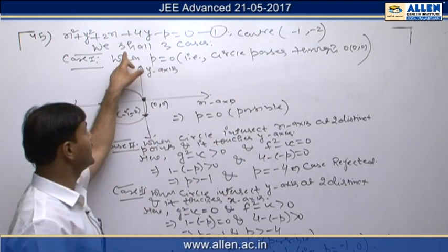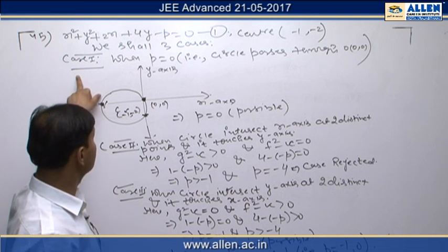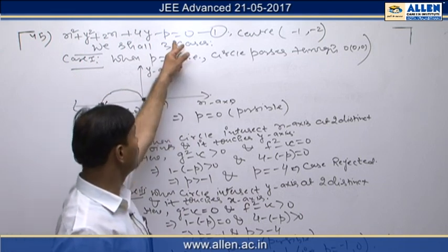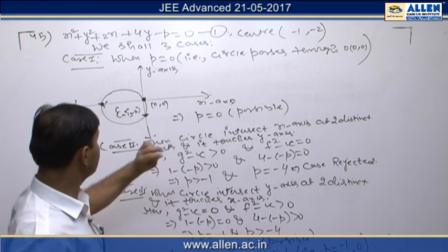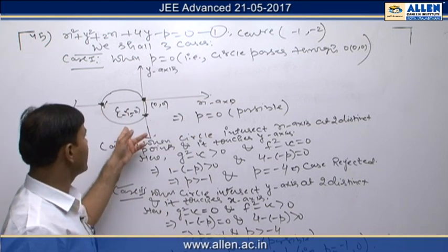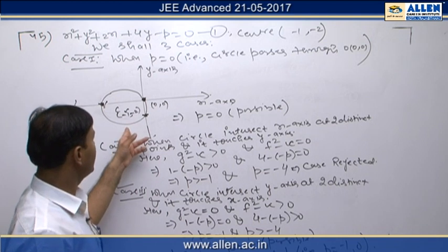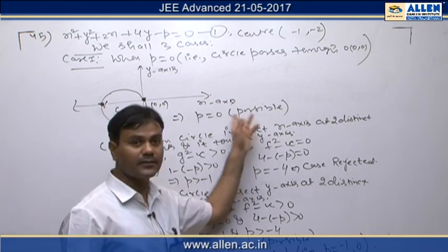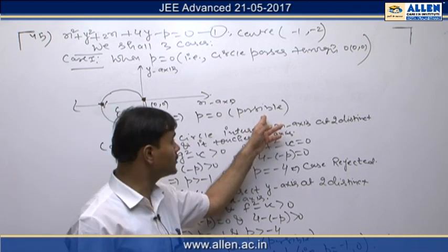In the first case, when p = 0, the circle is passing through the origin. Through the diagram we can see that the circle meets the coordinate axes at three distinct points. So p = 0 is one possible value.